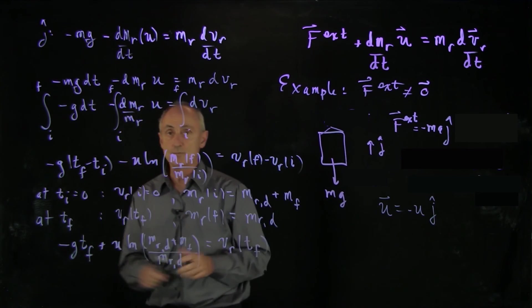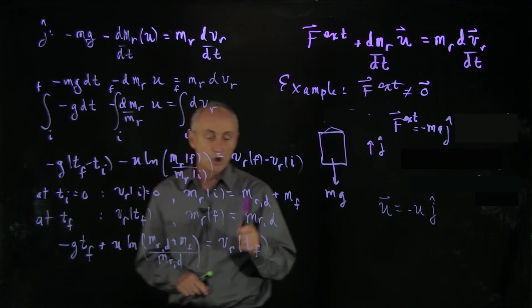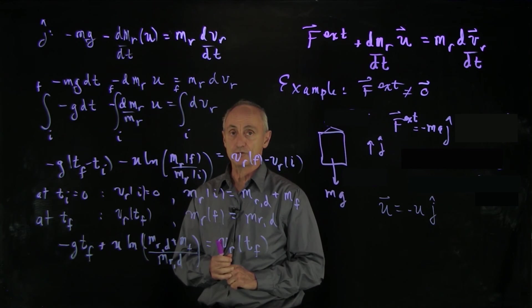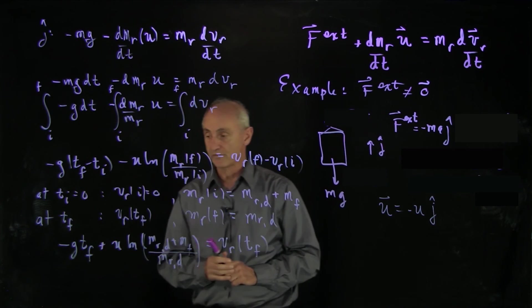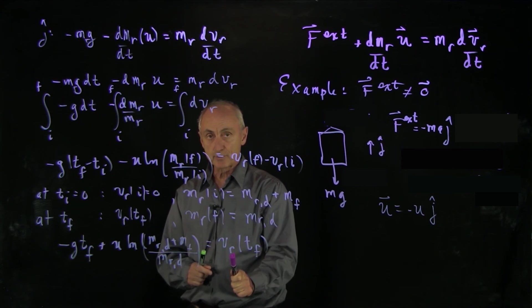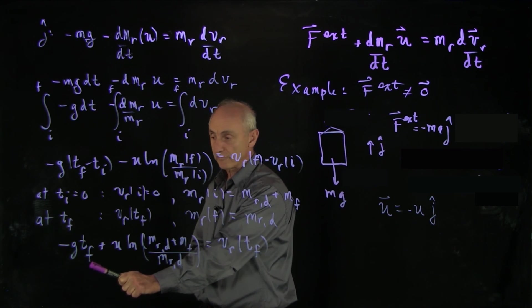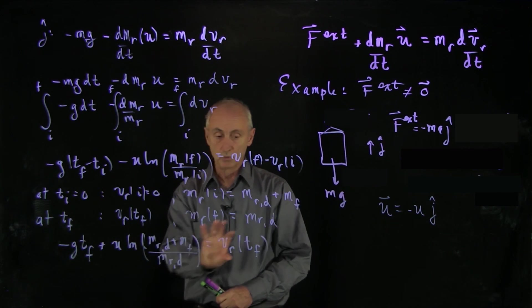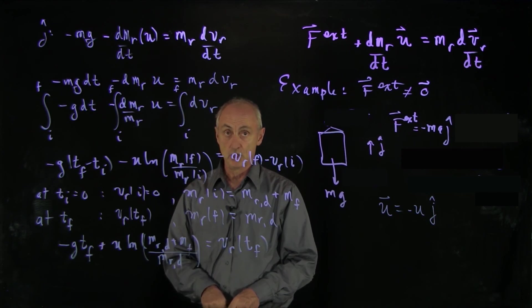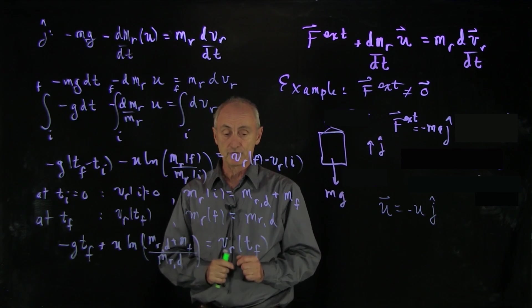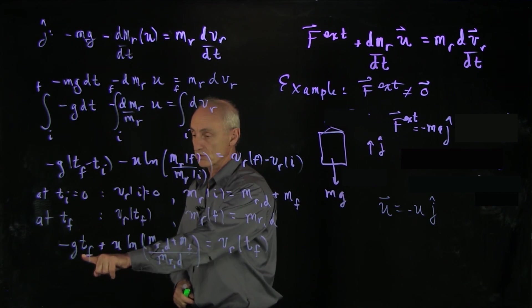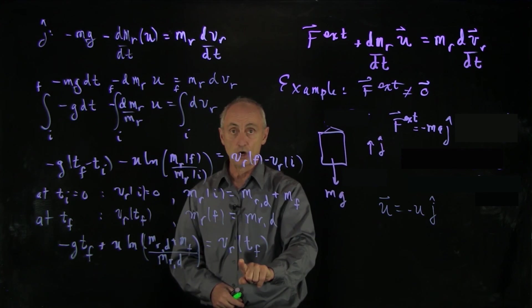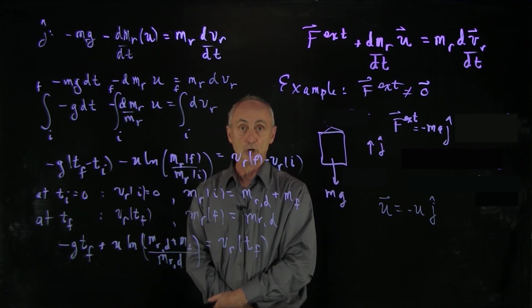So one of the interesting questions that you might ask is, how fast should you burn the fuel? And what will that have to do with the final speed? So we can see from this expression that if you burn the fuel for a very long period of time, so t final is big, then this piece will diminish the final velocity. So if you want the fastest speed after you've burned the fuel, you want to burn the fuel so that t final is as short as possible. We have the shortest burn time will give us the largest velocity when all the fuel has been burned.